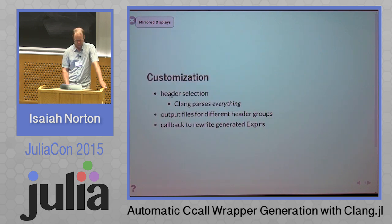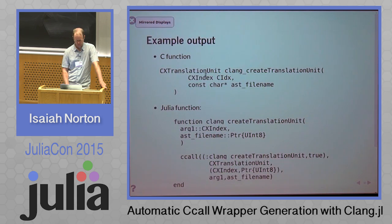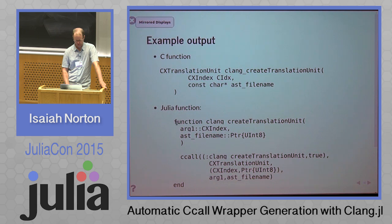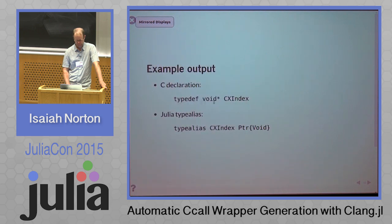For customization, you can select headers. One issue is that Clang parses everything, so you need to make sure you're only outputting the things you want and not trying to wrap all of libc or the C standard library. You can set output files for different header groups, and one very useful feature is callbacks to rewrite the generated expressions. Notice one of the arguments here is CXIndex — that's a typedef to a void star, and that's translated to a Julia type alias to a pointer void.